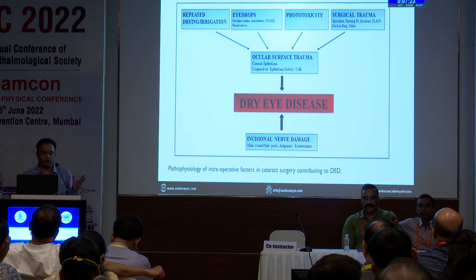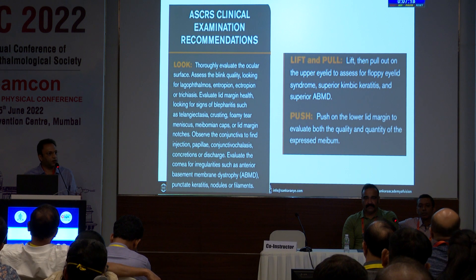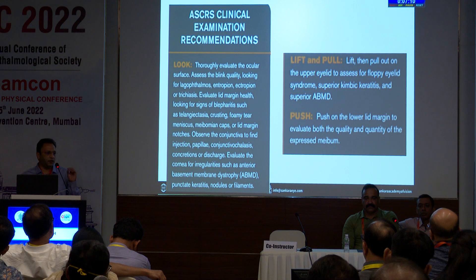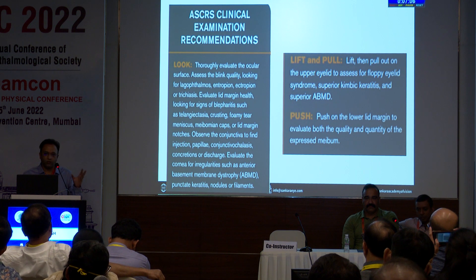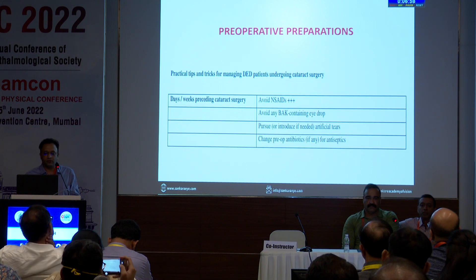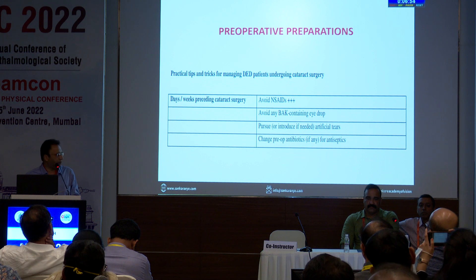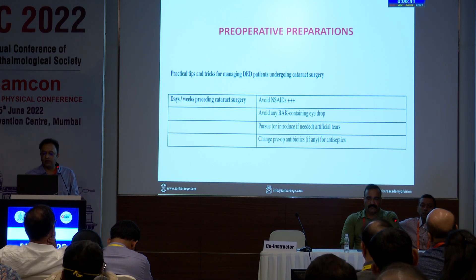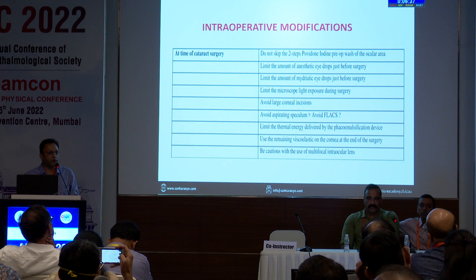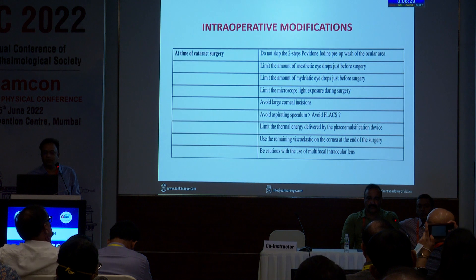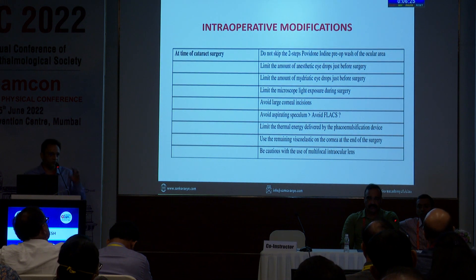Along with pre-existing dry eye, it's better you optimize preoperatively. The ACRS clinical recommendations ask us to thoroughly look into MGDs and the lids — any abnormalities in the lids should be addressed. Dr. Bhumanati also told us about avoiding NSAIDs, and BAK is the biggest culprit, so use as many benzalkonium chloride-free drops as possible. For pre-op antibiotics, continue with the two-step iodine protocol, which is proven to be the best antimicrobial prophylaxis. Limit the amount of anesthetic drops because they cause surface damage and epithelial toxicity.